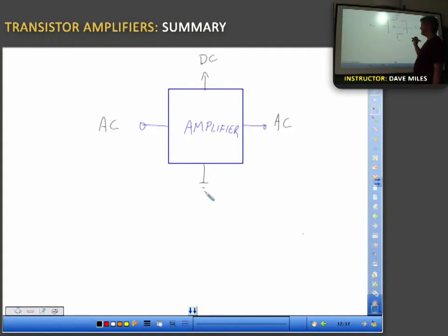So we talked about the different types of configurations. We have the common emitter, the common base, common collector. The advantages of each one. For instance, the common emitter has the best power gain. The common base had the best voltage gain. The common collector had the best current gain and was also very good at impedance matching.